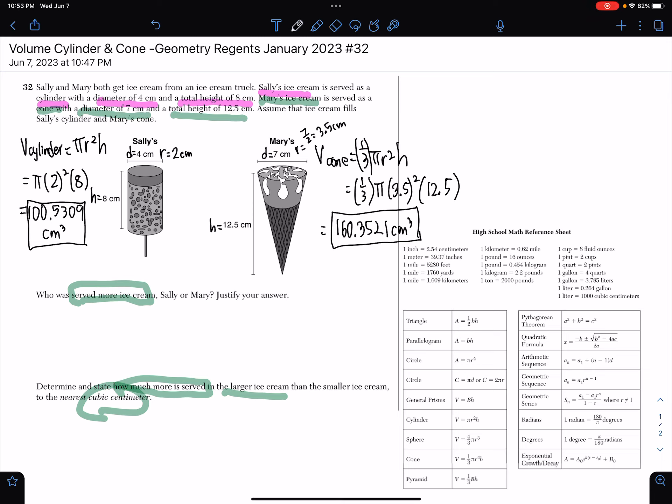As you can compare, obviously we know that Mary had more ice cream. When the question asks who served more ice cream, that would be Mary. When it says to justify, we'll just say that 160.3521 cubic centimeters of ice cream is greater than 100.5309 cubic centimeters of ice cream.